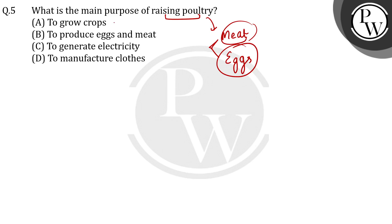First option is: to grow crops? No, not at all. To produce eggs and meat. Yes, this is the correct option. I hope this is clear. Thank you.